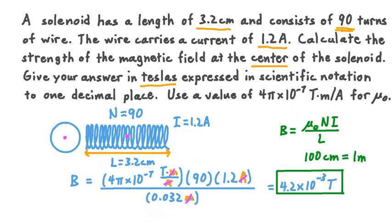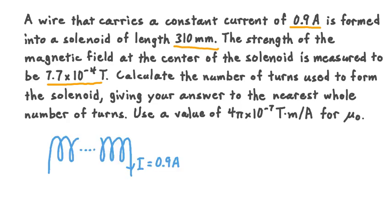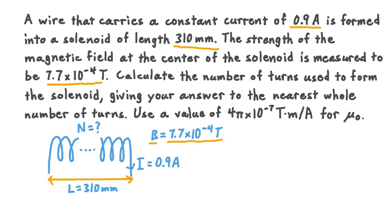This is the strength of the magnetic field at the center of the solenoid. Let's look at another example exercise. A wire carrying a constant current of 0.9 amperes is formed into a solenoid of length 310 millimeters. The strength of the magnetic field at the center is measured to be 7.7 × 10⁻⁴ teslas. Calculate the number of turns used to form the solenoid, giving your answer to the nearest whole number. Use 4π × 10⁻⁷ tesla meters per ampere for mu-naught. In this example we have a solenoid with current I of 0.9 amperes, length L of 310 millimeters, and an unknown number of turns capital N — that's what we want to solve for.